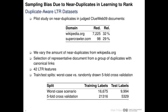In a pilot study, we use a precision-oriented approach to identify near-duplicates within judged ClueWeb09 documents. We find that Wikipedia is the only domain with non-negligible amounts of relevant near-duplicates, so we vary only the redundancy of Wikipedia documents. We select the representative document of a group of Wikipedia near-duplicates based on canonical links. We calculate 42 features, similar to the LETOR features, for our duplicate-aware learning to rank dataset.